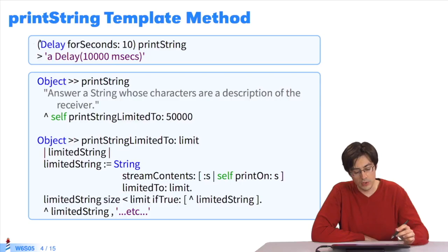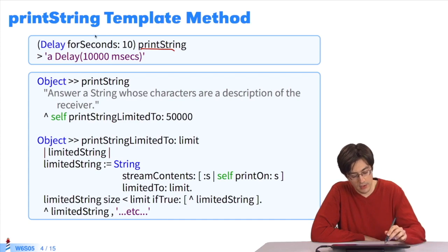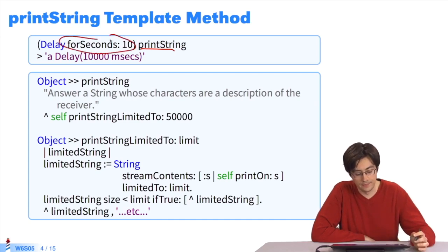We'll use printString as a first example. The idea is that if I send a printString message to an object, I get a string of characters that represents this object. Here, I have a delay. I've created a 10 second delay. If I send a printString message to this delay, I get a delay, and in parentheses, a millisecond value for the delay.